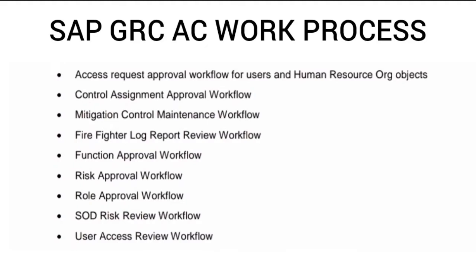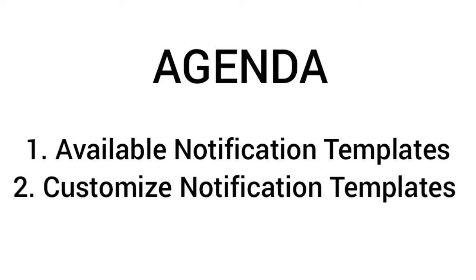Whenever a workflow event occurs, an email notification is automatically sent to the recipient. For this purpose, we can either use the pre-delivered message bodies already existing, or we can replace them with our customized text messages. In all these notifications we can also use notification variables that refer to special request attributes like user ID and request number.